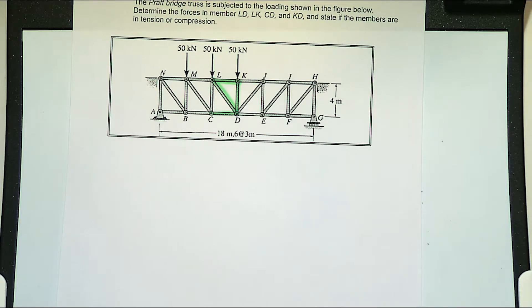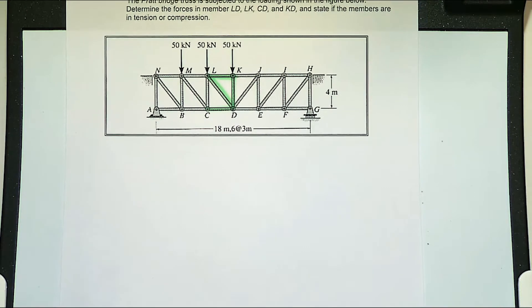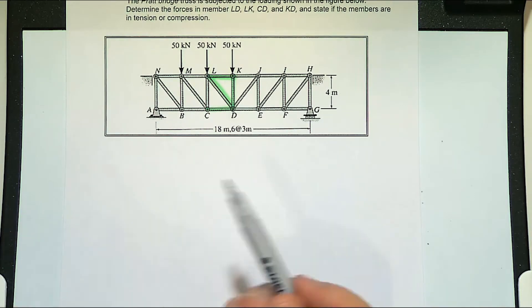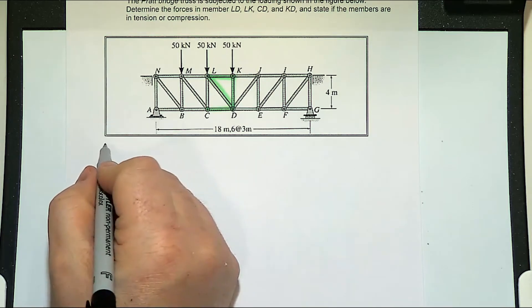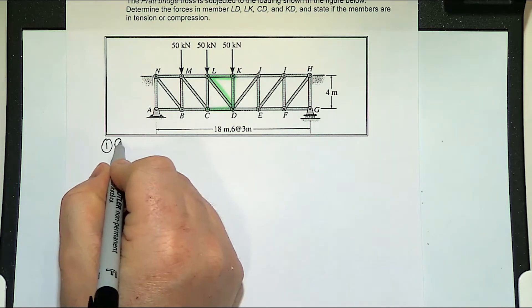You could solve this using the method of joints, or you could solve it with the method of sections. If you're doing either, you still have to work out what the reactions are. The first thing that we're going to do is work out what the reactions are.